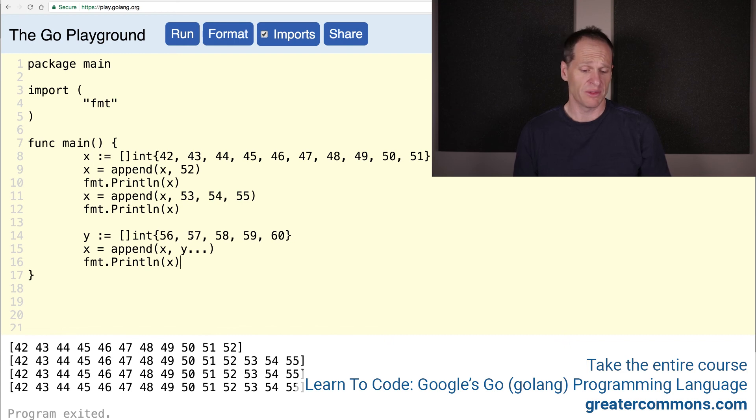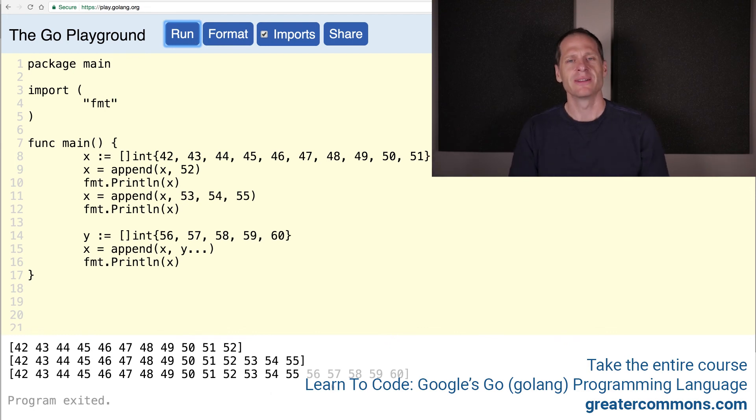So that should append 56, 57, 58, 59, and 60. I'm going to format the code and print it out. There we go. Cool. Isn't that a cool solution? I like that problem. I thought it was fun. I hope you did too.